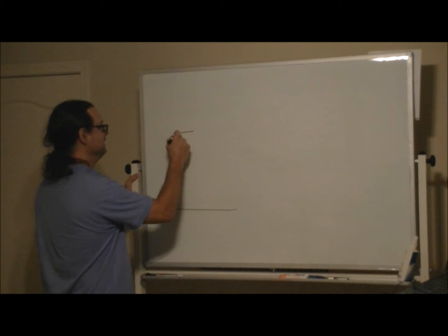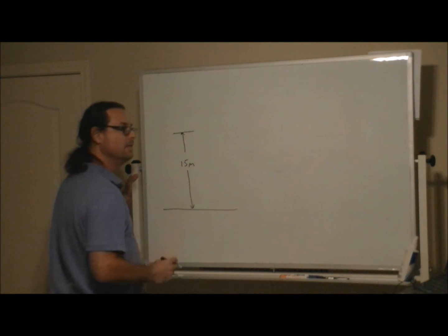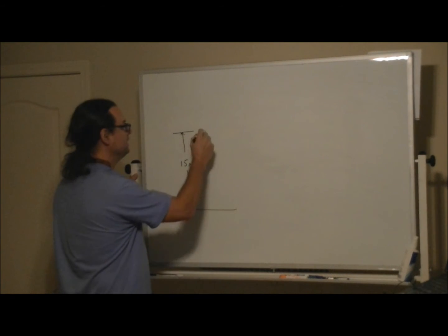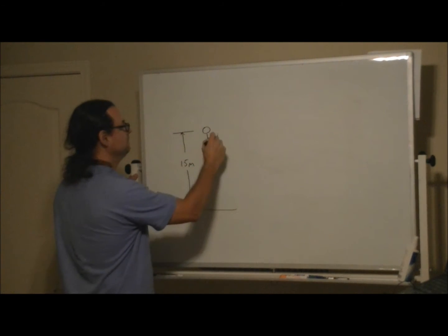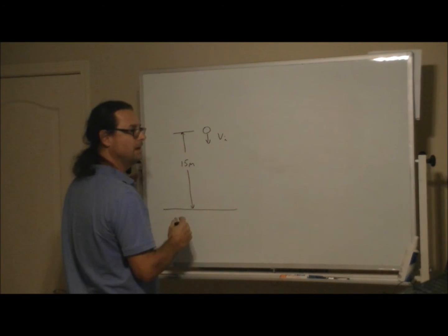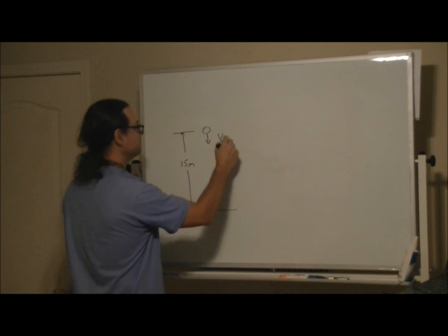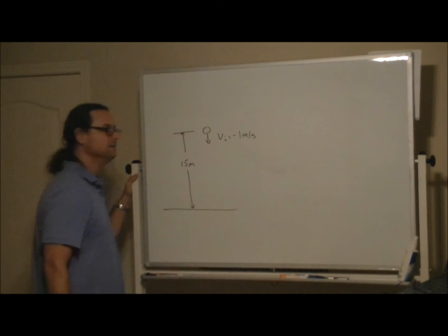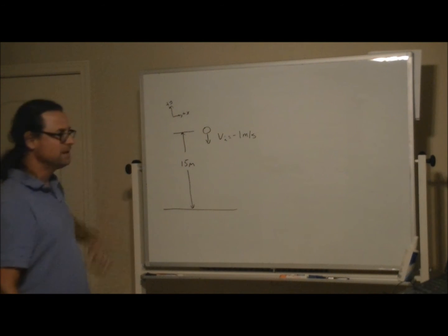The initial height is 15 meters and the ball is thrown straight downward. The initial speed is 1 meter per second but we're going to make that negative because it's downward. In our coordinate system we're going to have plus y being upward and plus x being to the right, so downward is negative.